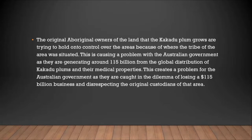The Aboriginal owners of the land where the Kakadu plum grows are trying to hold on to control of the area due to where the tribe was originally situated. This is causing a problem with the Australian government, as they are generating about $150 billion across global distribution of the Kakadu plum for medicinal purposes, putting the government in the difficult dilemma of losing a major business while risking disrespect to the original custodians of that area.